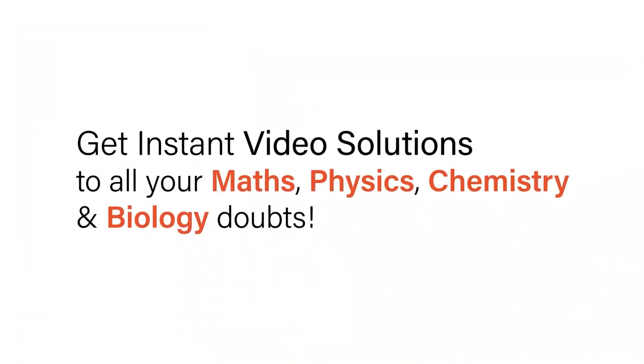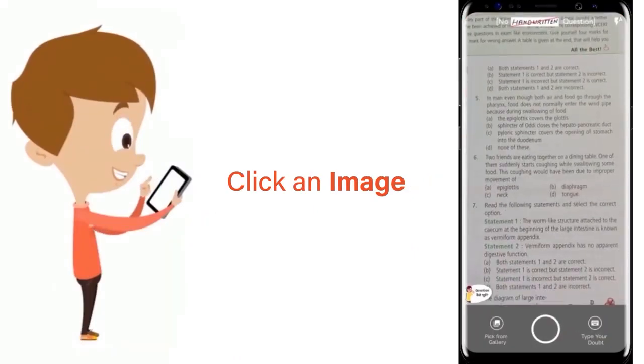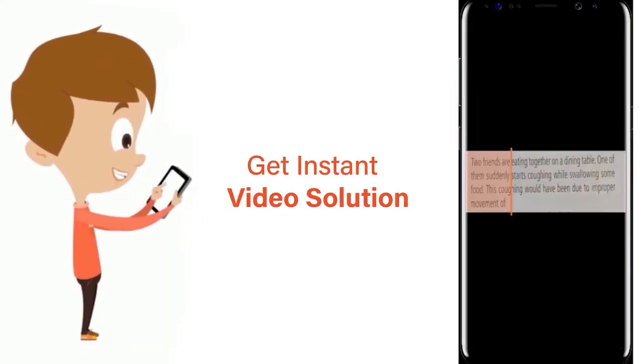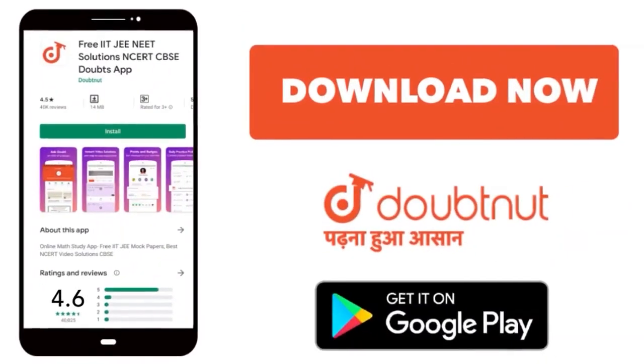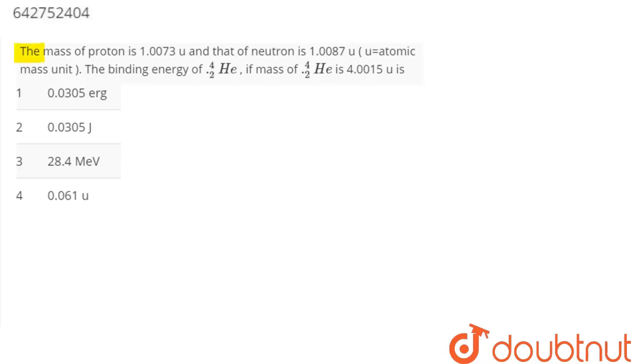With Doubtnet, get instant video solutions to all your math, physics, chemistry, and biology doubts. Just click the image of the question, crop the question, and get instant video solution. Download Doubtnet app today. Mass of proton is 1.0073 u.